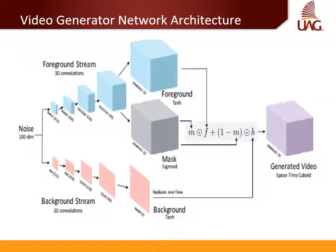This is a diagram of the network architecture for the generator, consisting of a foreground pathway of fractionally strided spatiotemporal convolutions and a static background pathway of fractionally strided spatial convolutions. Both pathways are upsampled, and the module learns without supervision to generate these pathways such that when combined, the video looks real. Below each volume, its size and the number of channels in parentheses are shown.